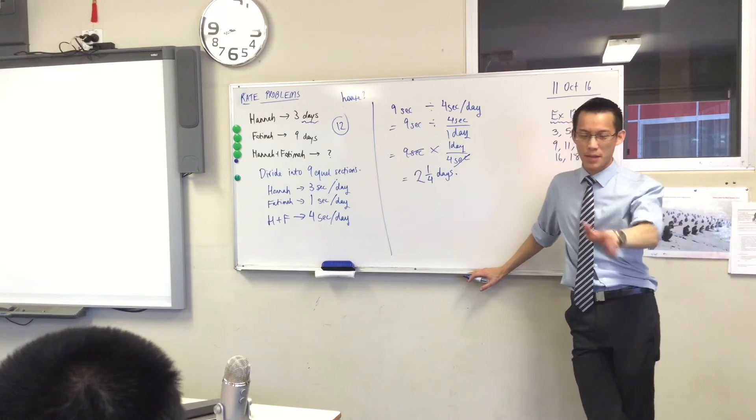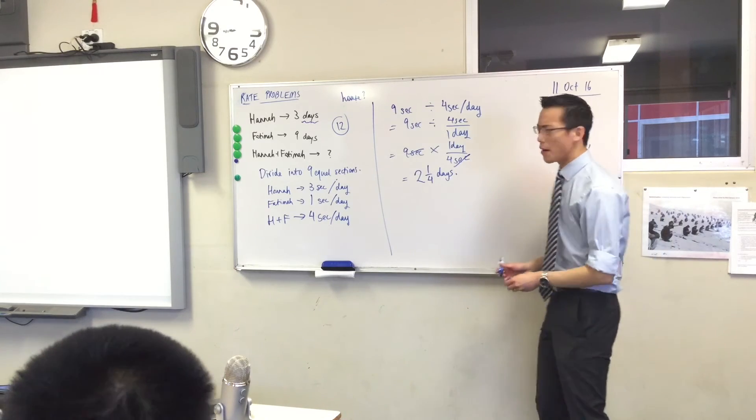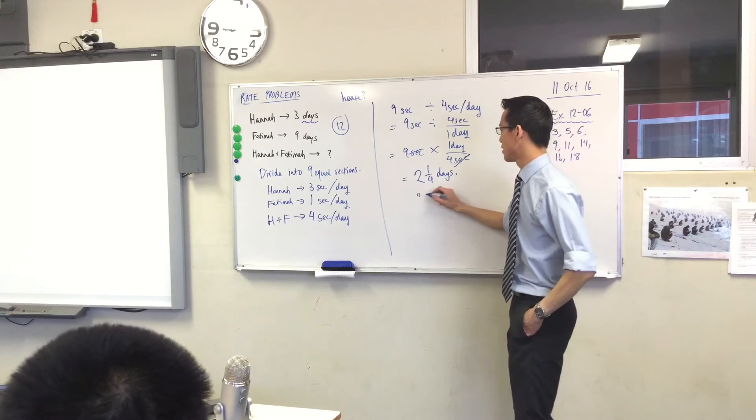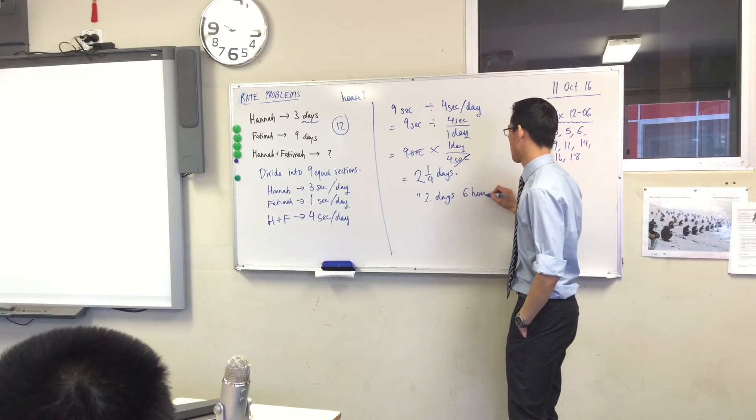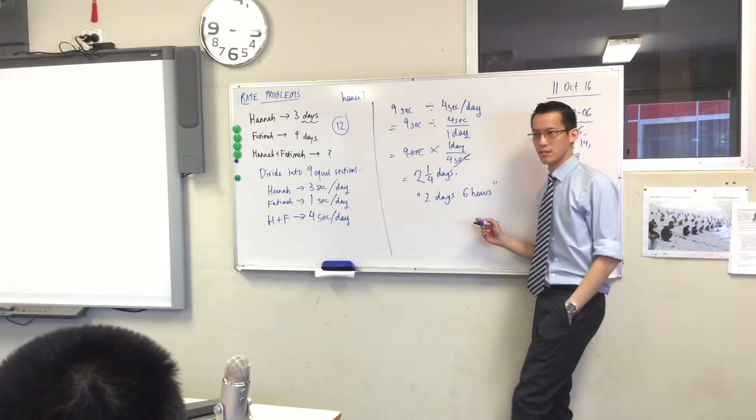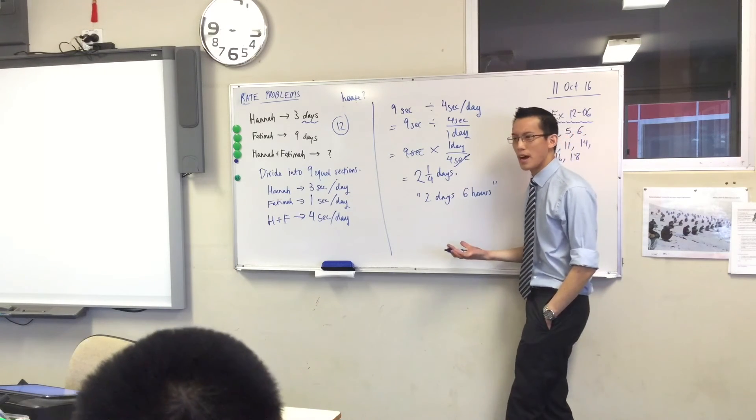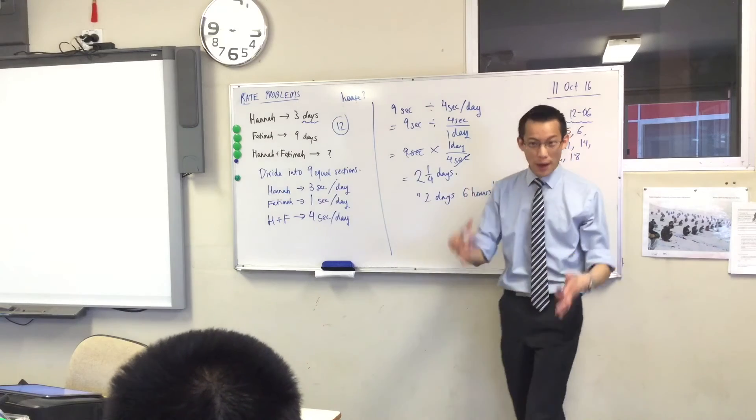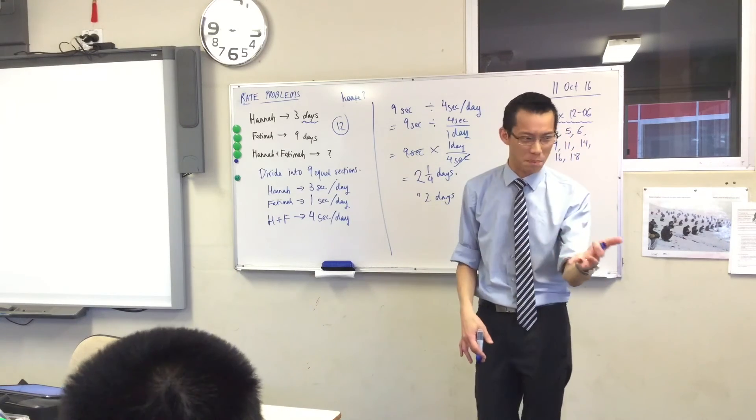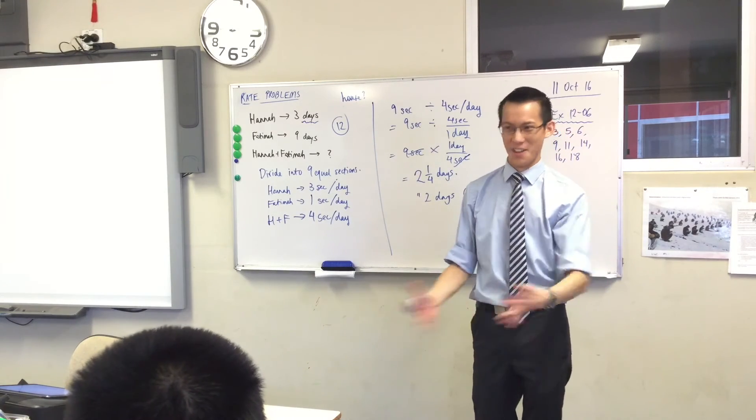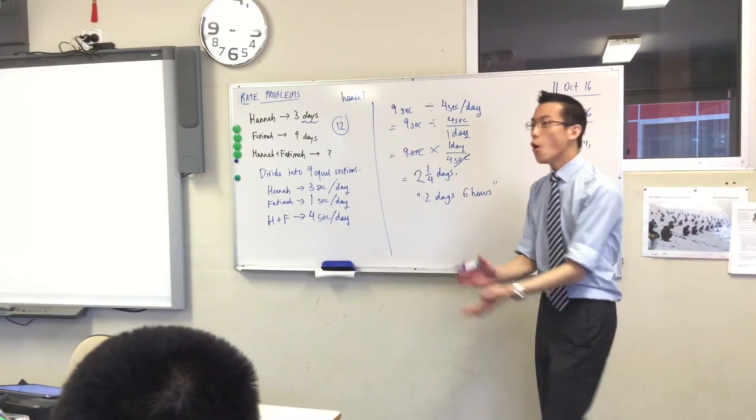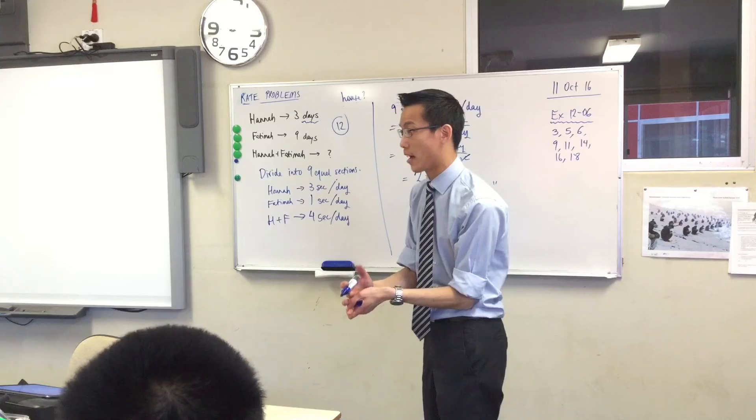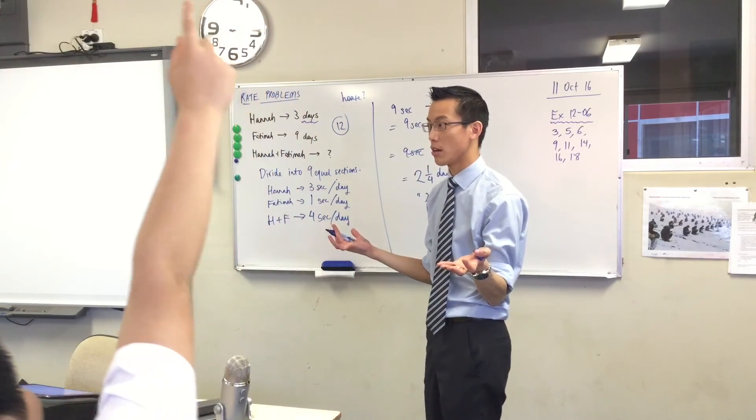Now, just as a bit of an end note before I ask you to pack up, I suppose you could say, don't write this down, you could say two days and six hours. Why have I said six hours? Because a day is 24 hours, right? So that's a quarter of a day. But are we really expecting that they're actually painting 24 hours a day, nonstop, no eating, no sleeping? They're probably not doing that, right? What do you reckon is a normal workday? How many hours in a normal workday? Nine to five.